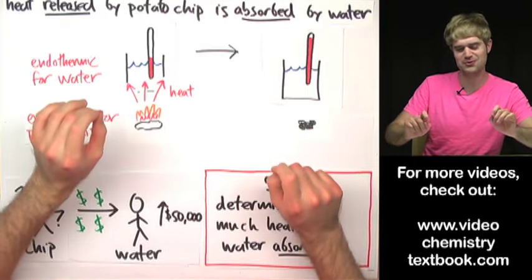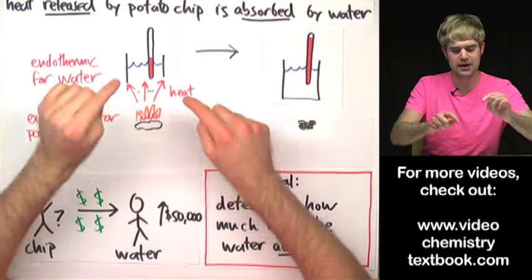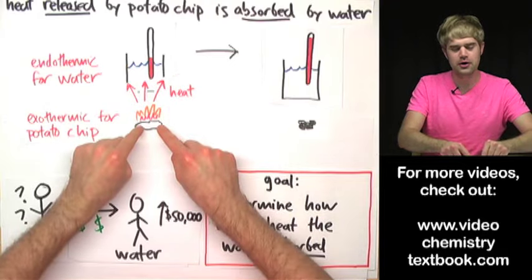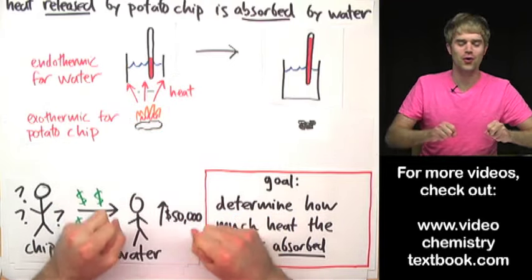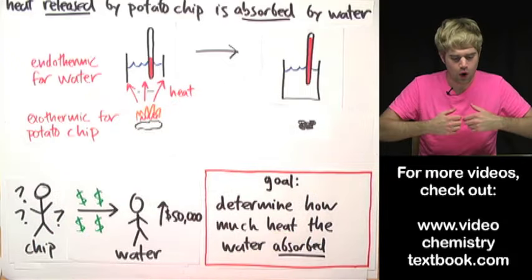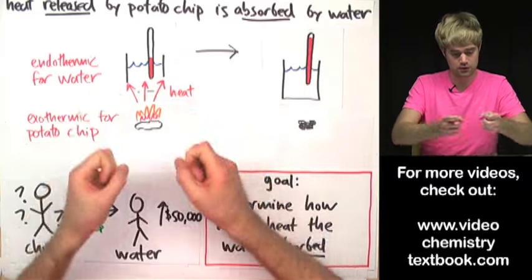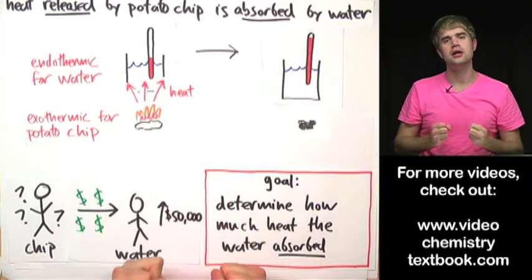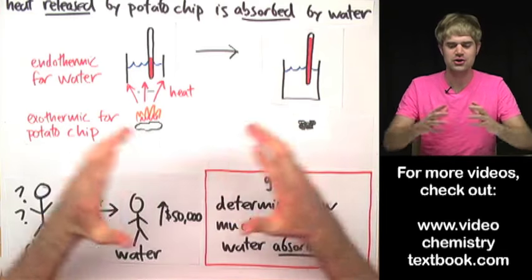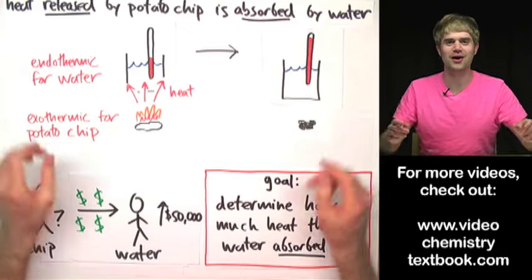Because just to go through this one more time, the amount of heat that the water absorbed, we're assuming is the same that the potato chip released. And since we're burning this potato chip to a tiny little crisp, we're imagining that it is releasing all the heat it has. So all the heat from the potato chip gets given up, it goes into the water, it's absorbed by the water and then we measure how much heat the water absorbs. It tells us how much was originally in the potato chip. So this is the broad picture of what's actually going on here.